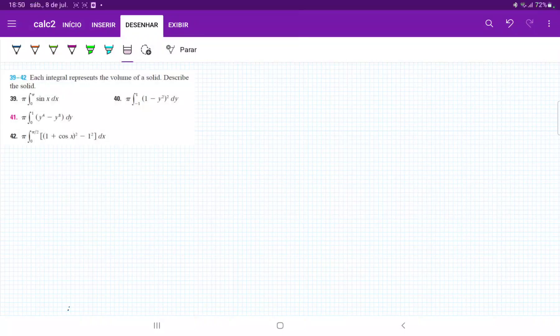In problem 41, we're asked to describe the solid given by the integral. So this is the integral from 0 to 1 of π times y⁴ minus y⁸ dy.